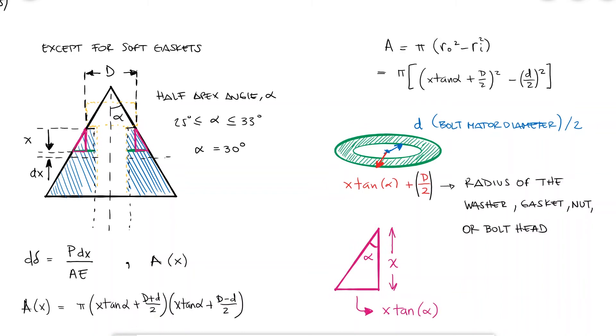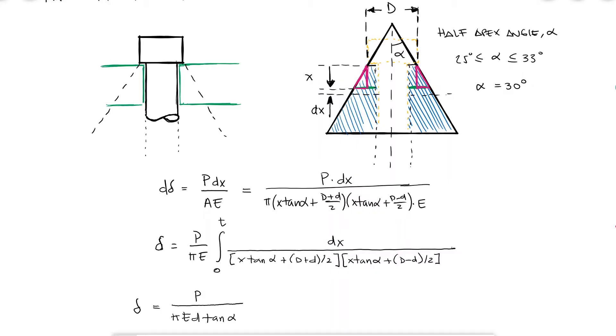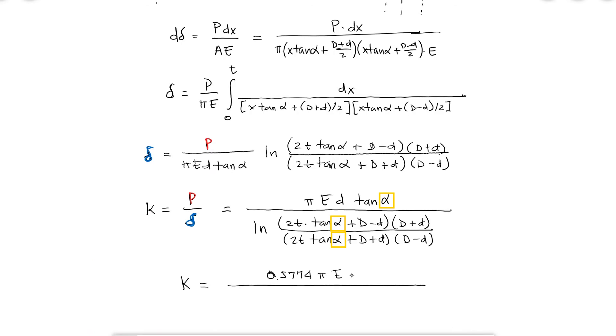We can substitute it in the displacement equation and integrate with respect to x from 0 to the thickness t of the member. The result of the integral would be the displacement, which means that the stiffness is the load over the displacement.